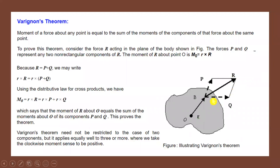Since capital R equals P plus Q (the two non-rectangular components), we can write: small r × capital R = small r × (P + Q).